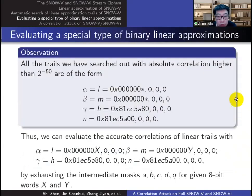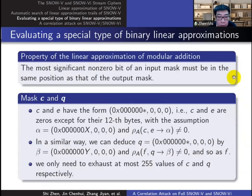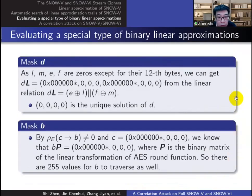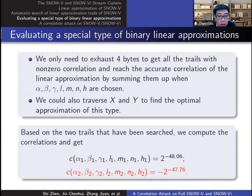In fact, the trails we've searched out have part of masks in common, and we can get the accurate correlation of this type of approximations by exhausting the intermediate masks. By the property of the modular addition, we can reduce the range of c to 255, and so as a, b, and q. For d, we prove that zero is the unique solution.